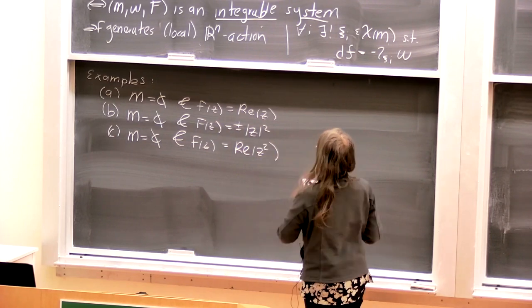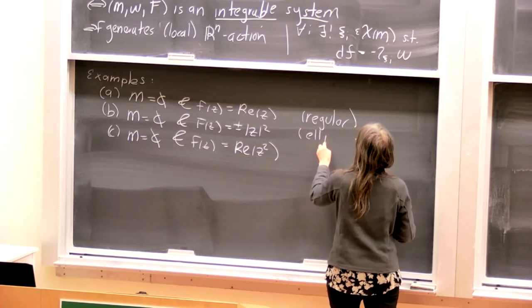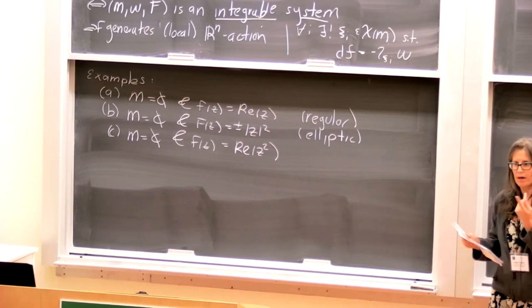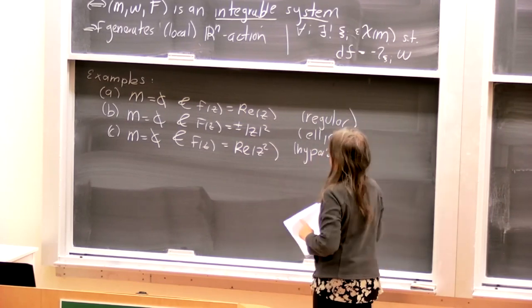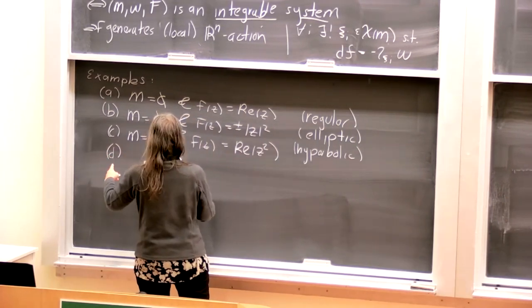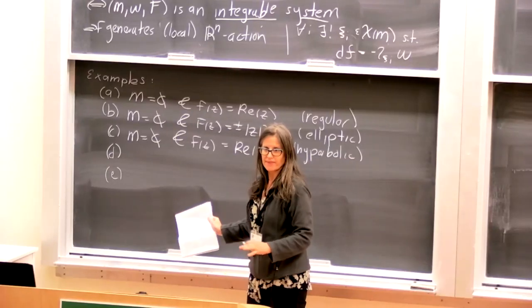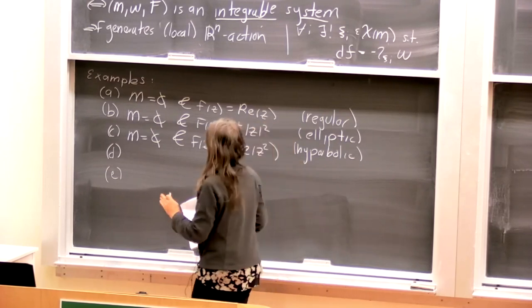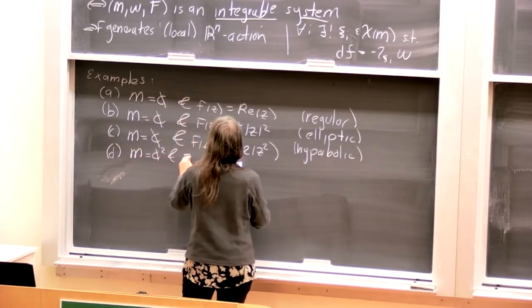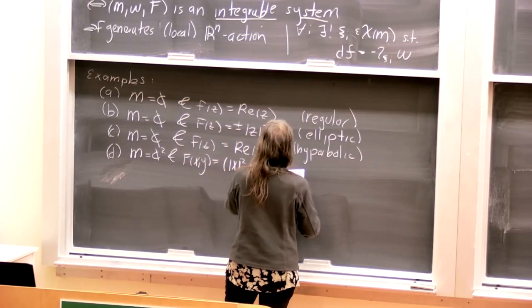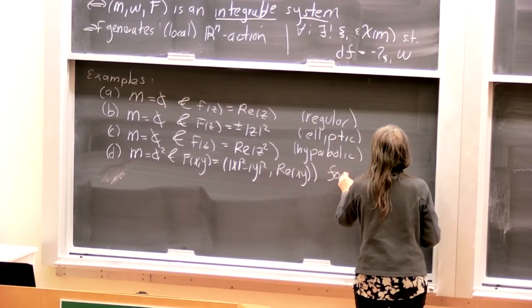We can let M equal C and f of z equals the real part of z squared. I should point out, this is called regular and this just induces a free R action. This we call elliptic, and this generates a circle action of speed one. This we call hyperbolic, and this generates an R action, not a circle action. Then we have focus-focus.